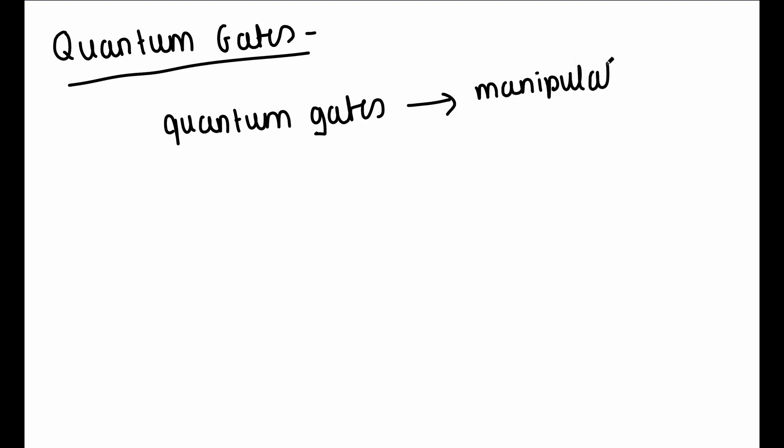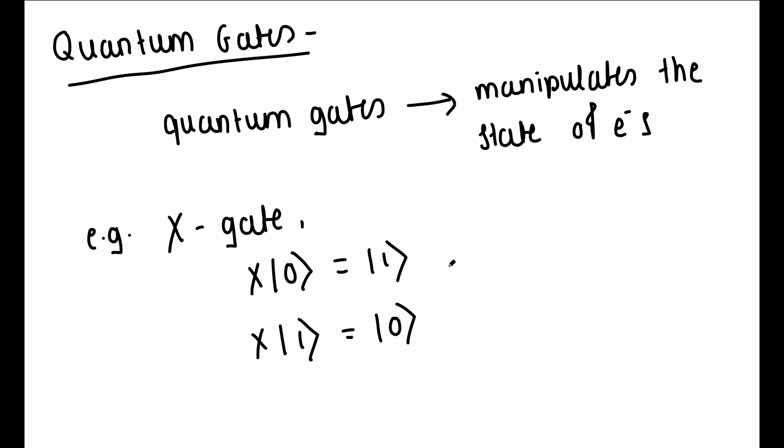Just like your computer's electronic circuit is built using logic gates, we also have quantum gates, which manipulates the state of your electrons. Example is an X gate, which if acted on ket 0 gives ket 1, and if acted on ket 1 gives ket 0, that is it flips ket 0 into ket 1 and vice versa.